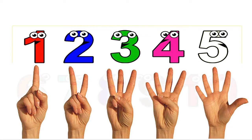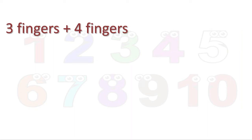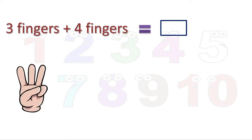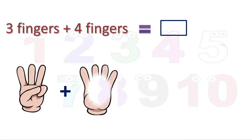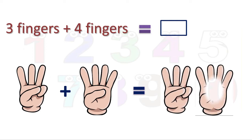Here is our first sum. Three fingers plus four fingers is equal to how many fingers? Here you can see three fingers, plus four fingers. Together they make — this is nothing but addition. Addition means counting together. Now we will take these two pictures. This is three fingers along with four fingers. We will count these fingers: one, two, three.